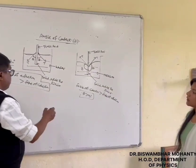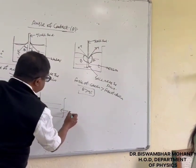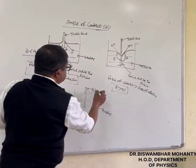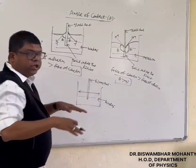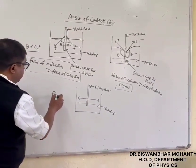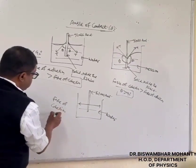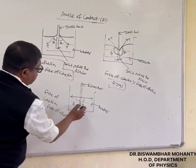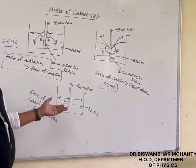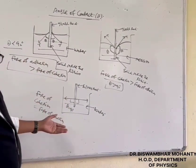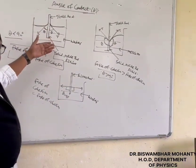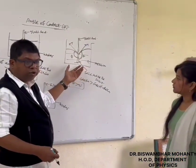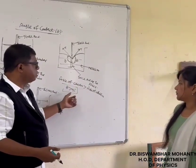Suppose in the case of water placed in a container with a silver rod, the level is such that the force of cohesion is equal to the force of adhesion, and in this case theta is equal to 90 degrees. So when a silver rod is placed inside water, the angle of contact is 90 degrees. For glass placed inside water, the force of adhesion is greater than the force of cohesion. For glass placed inside mercury, the force of cohesion is greater than the force of adhesion, and theta is greater than 90 degrees.